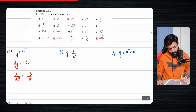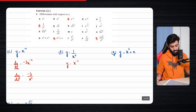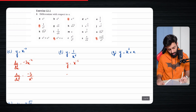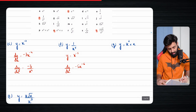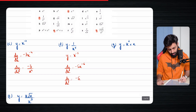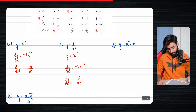Now comes part f. The first thing I want to do is make it differentiation ready. Now it is differentiation ready, so we can go about differentiating it. This becomes minus 5 x to the power minus 5 minus 1, which is equal to minus 6. As always, I'm going to make the power positive, so this becomes minus 5 over x to the power 6.